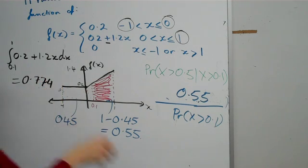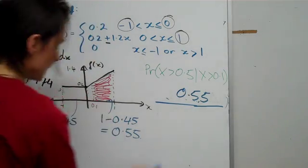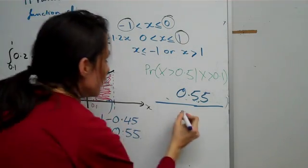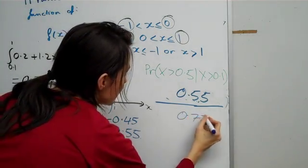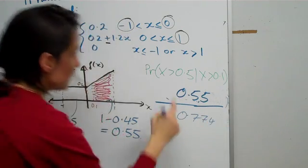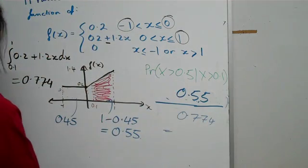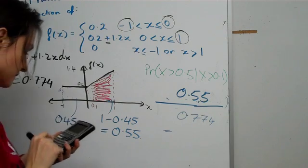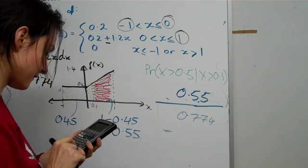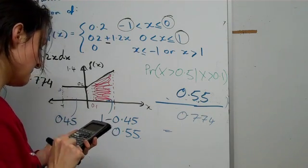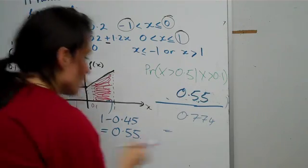Which means that this probability down here is 0.774. And then finally, to get the answer to this, you just basically do 0.55 divided by 0.774, and you get an answer of 0.71.